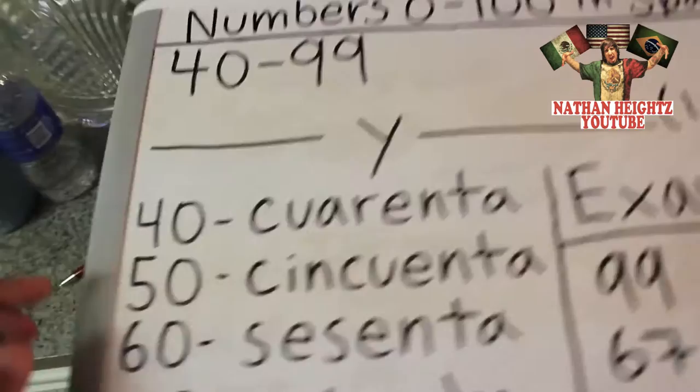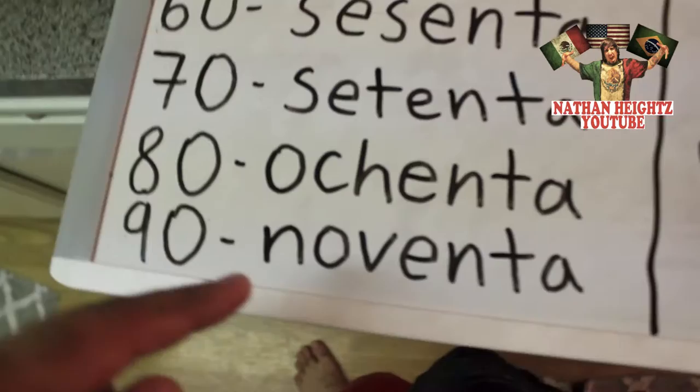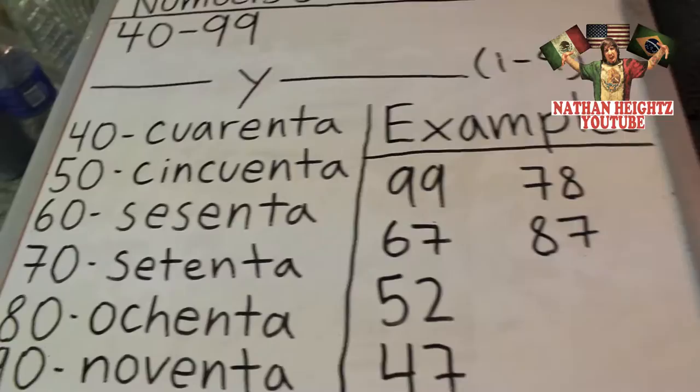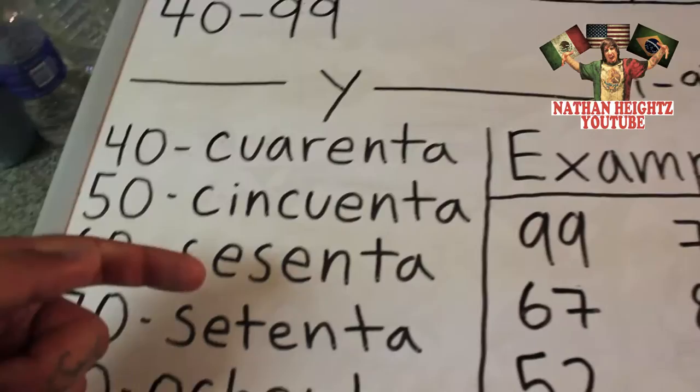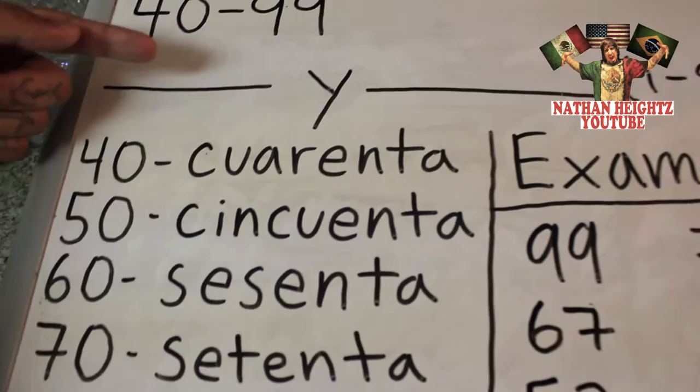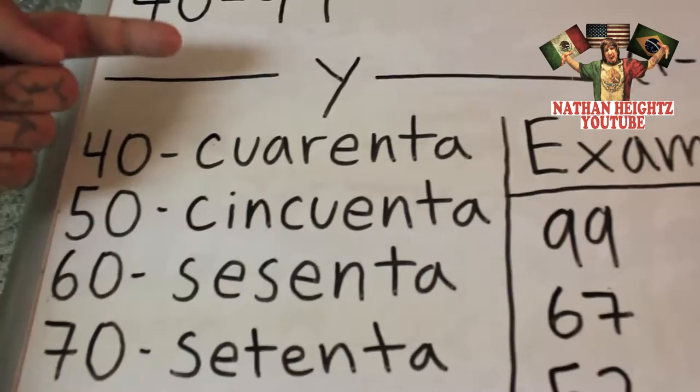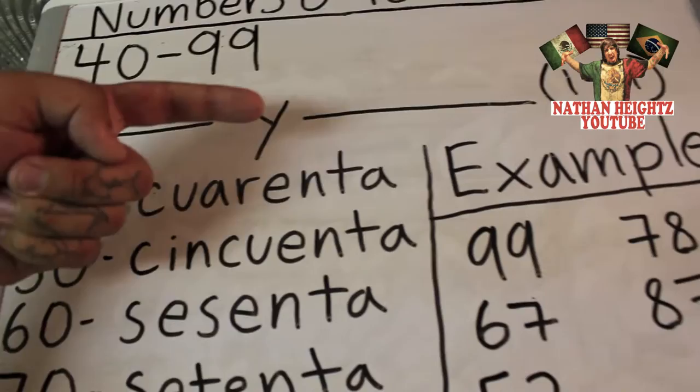For example, if we wanted to say 99, we would plug 90 into the first slot and 9 into the second slot, so it'll be 99. 67 will be 60 y 7. 52 will be 50 y 2. 47 will be 40 y 7. 78 will be 70 y 8. 87 will be 80 y 7.